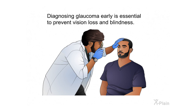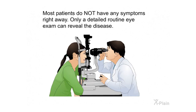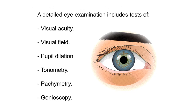Diagnosing glaucoma early is essential to prevent vision loss and blindness. Most patients do not have any symptoms right away, so only a detailed routine eye exam can reveal the disease. A detailed eye examination includes tests of visual acuity, visual field, pupil dilation, tonometry, pachymetry, and gonioscopy.